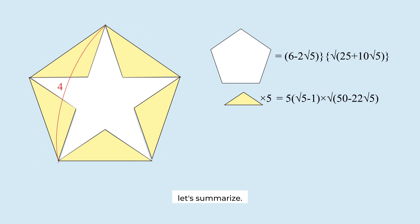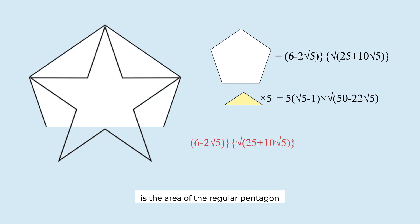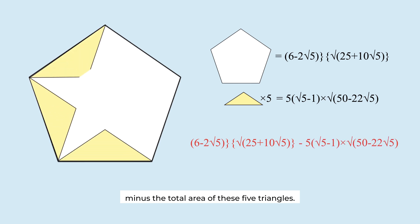Let's summarize. The area of this star is the area of the regular pentagon minus the total area of these five triangles. Simplify the equation as much as possible. It can't be simplified further due to the irrational numbers. It is the area of this star.